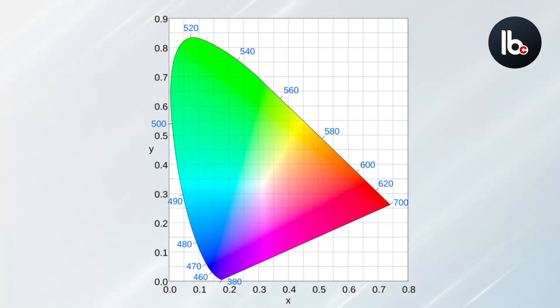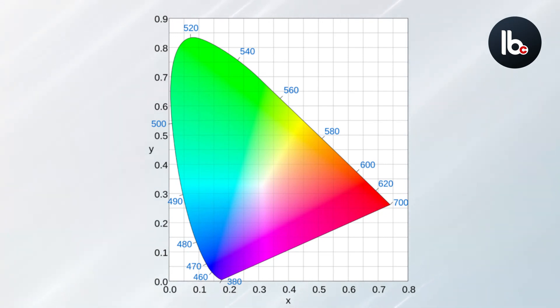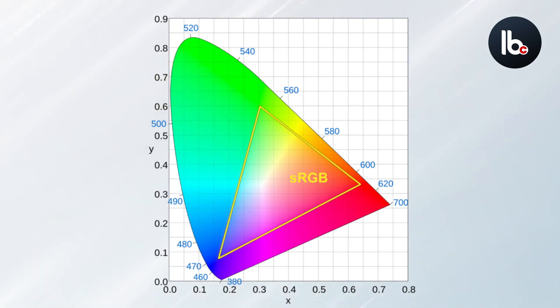This is RGB on the computer screen. This RGB has its own color space — this one is a spectrum of sRGB. It is standard RGB.